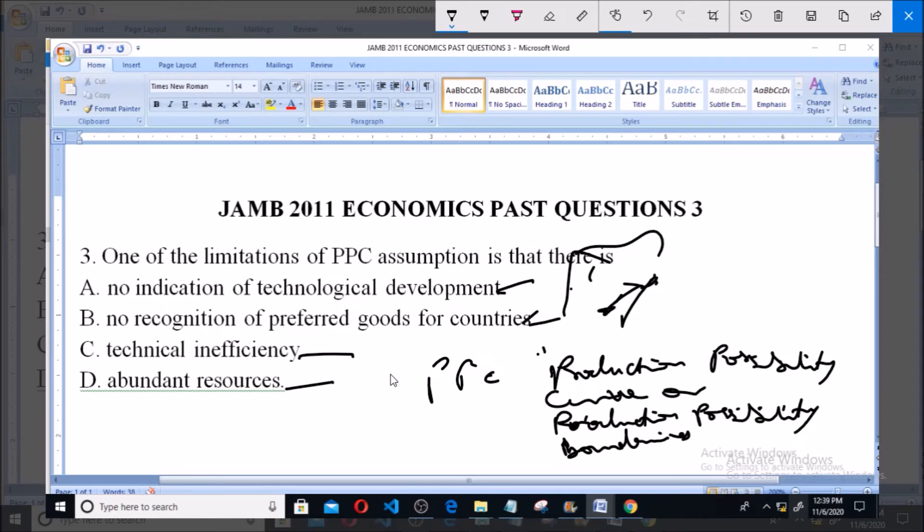The cost is measured in terms of quantity forgone of the other types of commodities.